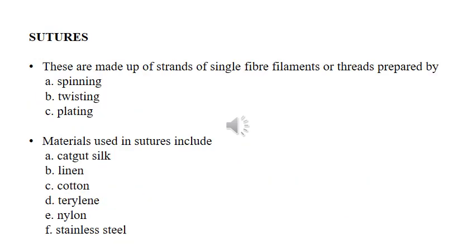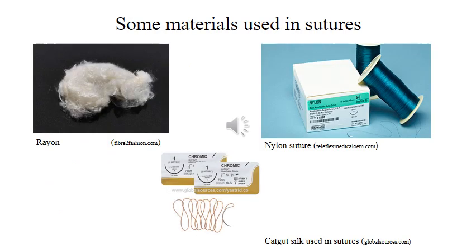Sutures are made up of strands of single fiber filaments or threads and can be prepared by the following processes: spinning, twisting, and plaiting. The materials used in these sutures could be linen, cotton fibers, terylene, nylon, and stainless steel. Examples shown include rayon, nylon sutures used in hospitals, and the cat gut called silk also used in hospital sutures.